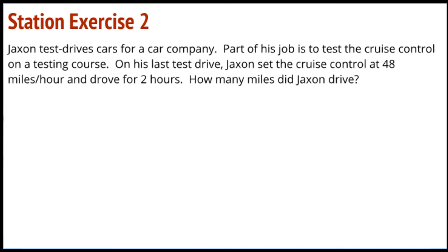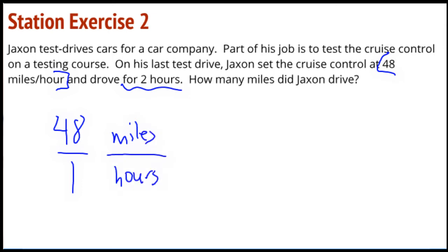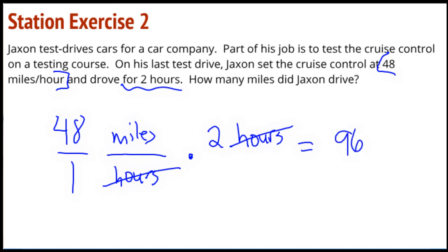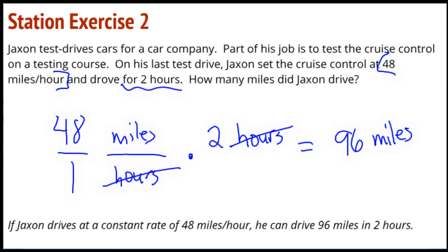Exercise 2: Jackson test drives cars for a car company. Part of his job is to test the cruise control — a button you push that keeps the car at a steady speed, doesn't speed up, doesn't slow down. On his last test drive, Jackson set the cruise control at 48 miles per hour — my brain just screamed at me — and drove for 2 hours. I've got a 48 to 1 unit rate with miles and hours, scaling up to 2 hours. The hours cancel, and 48 times 2 gives me 96 miles in 2 hours.